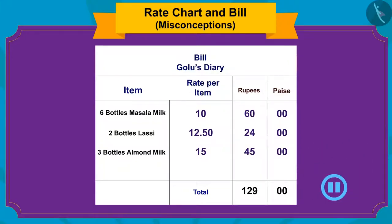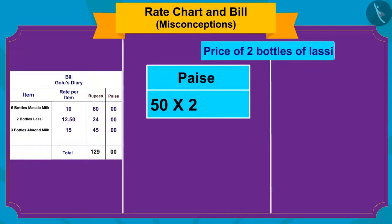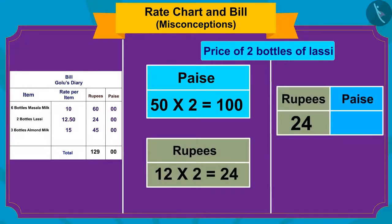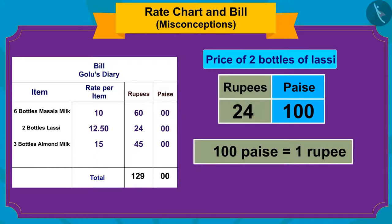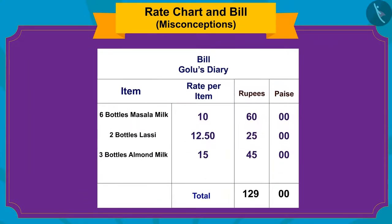If you want, you can pause the video and find the answer. Well done children! You have found the answer. Quite rightly! Golu made a mistake when calculating the total price of lassi. When he converted 100 paise to 1 rupee, he forgot to add it to the number 24. So, what should be the cost of two bottles of lassi? Yes! 25 rupees!